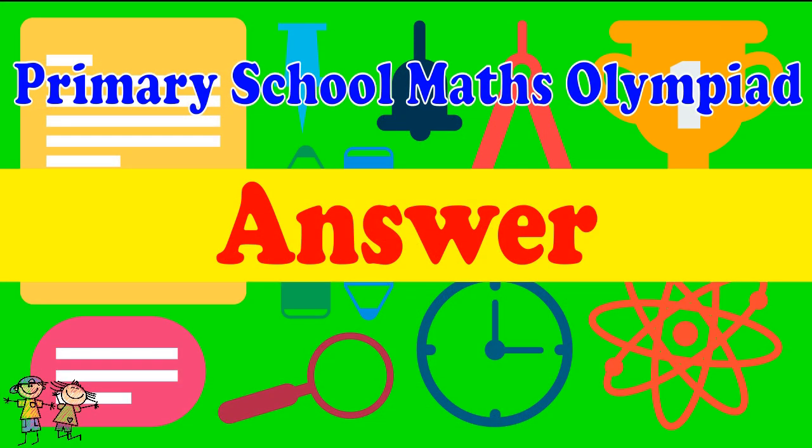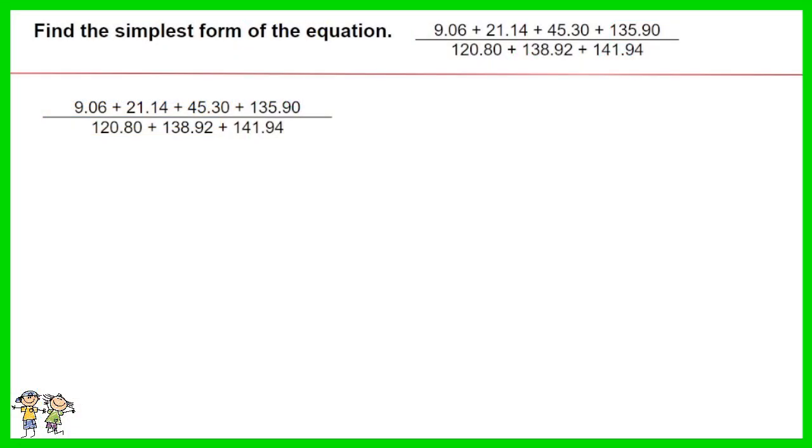Here is the recommended answer. Both the numerator and denominator appear to be multiple of 3.02. Simplify both by having them in multiple of 3.02, as shown.